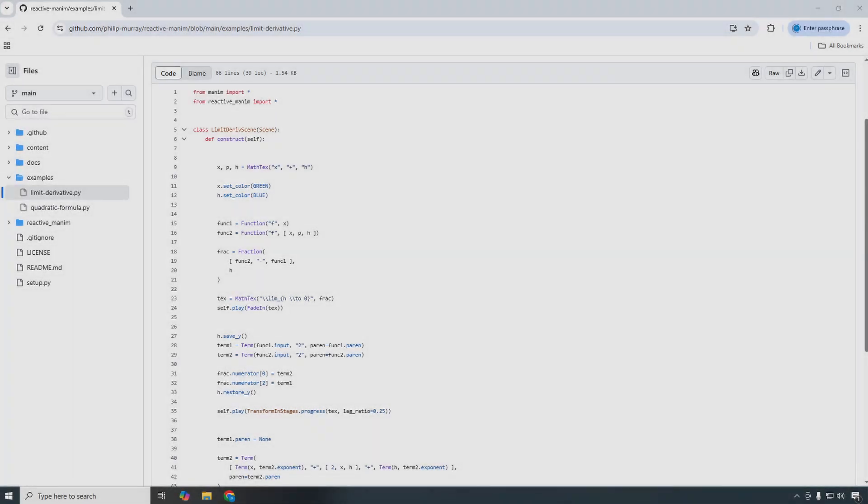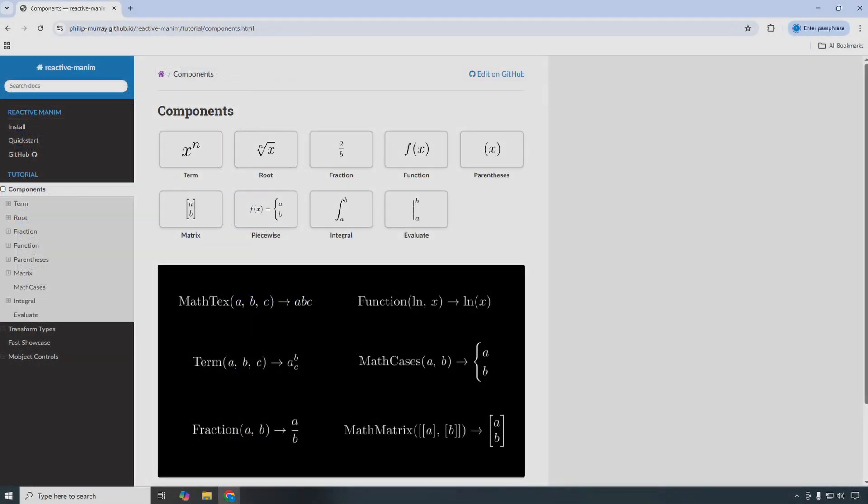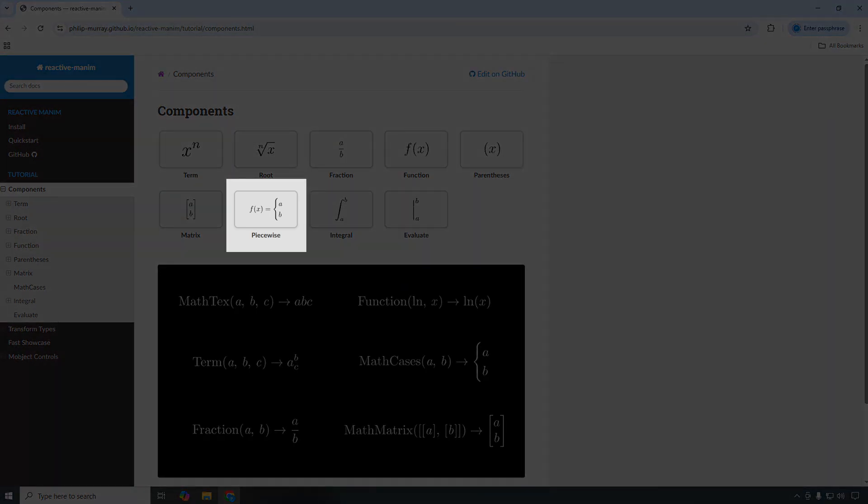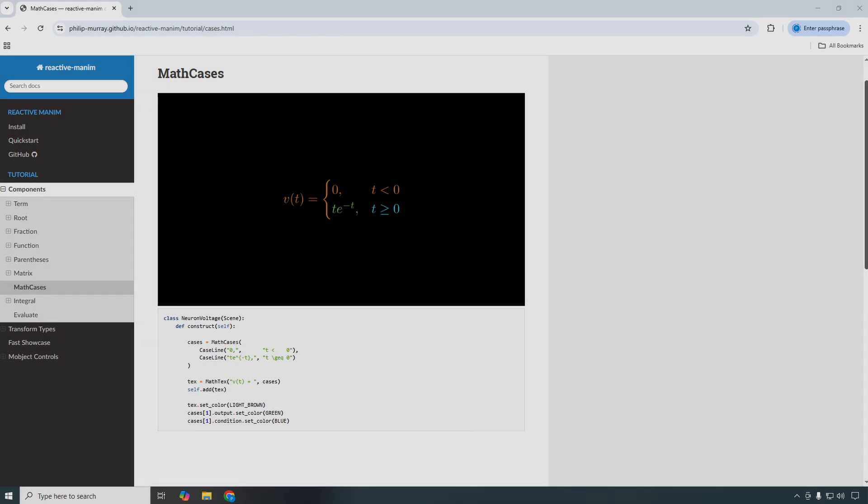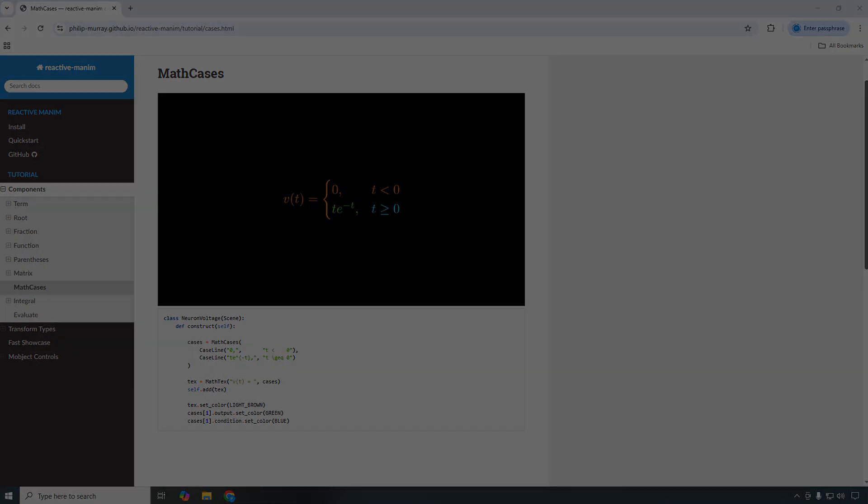You can find the code for this tutorial in the examples directory of the project's GitHub page. There is also a documentation site, where you can click on a math component that you're interested in, and it will take you to a page that has examples for that component.